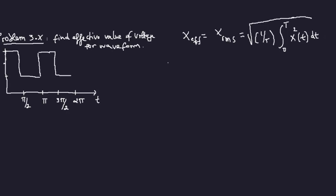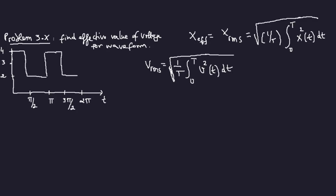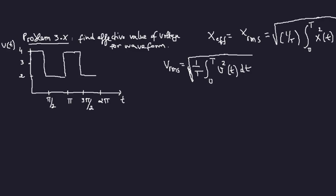Okay, so this is x_eff. Now the question is asking for voltage, so I'm going to apply v. My v_rms would be equal to square root of 1/t, same thing, zero to t, but then I'm dealing with voltages here so v squared of t dt. This is the square root of everything. The graph that's given here is v of t per t.